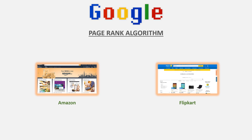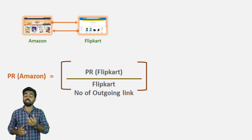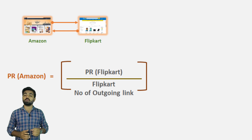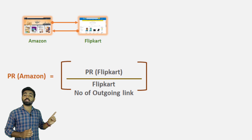First, there is a Flipkart page on Amazon, and there is a link on Amazon. We can select the pages: Amazon and Flipkart. There is a formula here. The PageRank of Amazon equals the incoming links to Amazon. If you want to select Amazon, there is one incoming link from Flipkart to Amazon, and there is one incoming link on Flipkart.